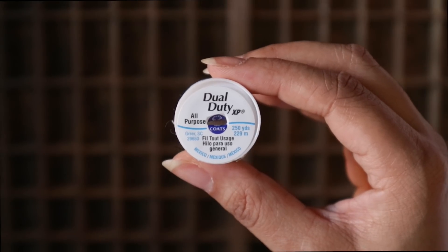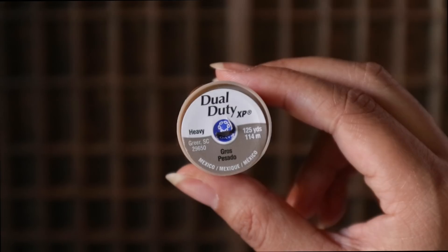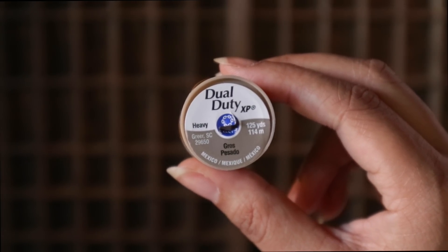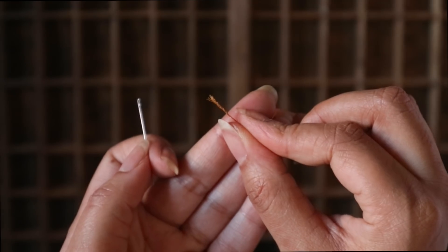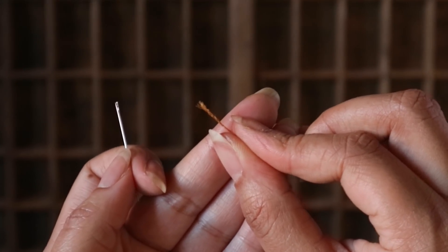I'm using this brand of all-purpose thread, which is probably the most common brand that you will see. You can also buy thread in heavy, but this is usually for things like jeans. If your thread is frayed like so, you may want to consider trimming it or licking it—whichever works.